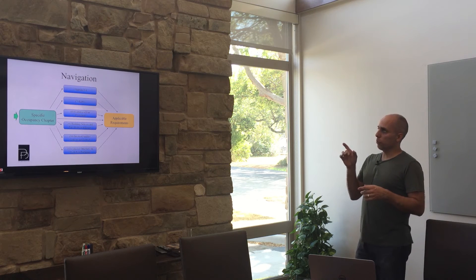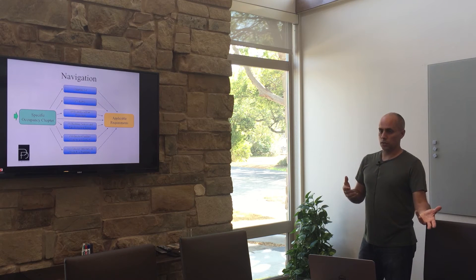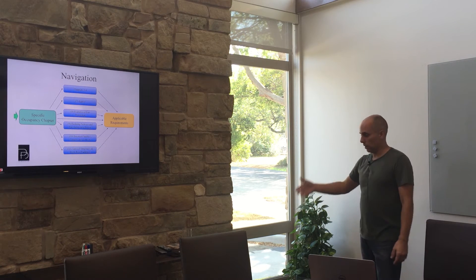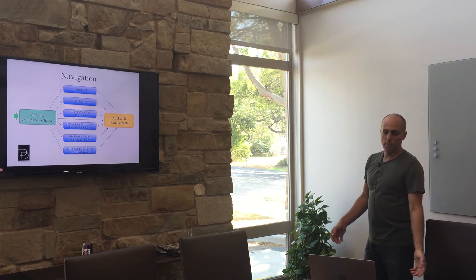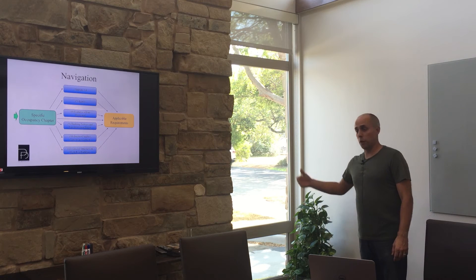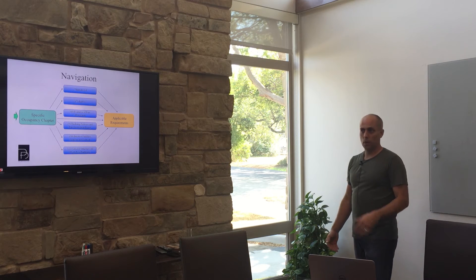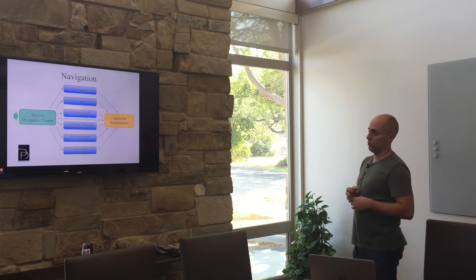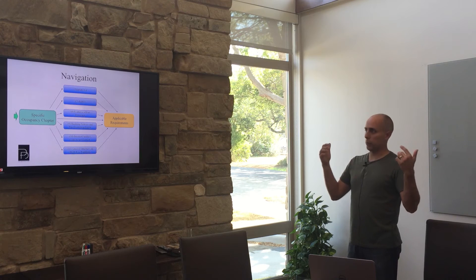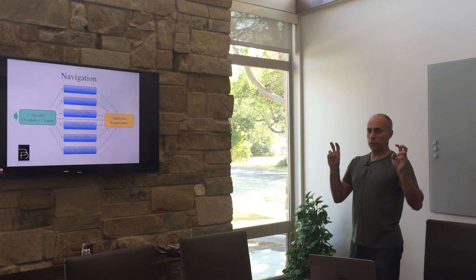One of the biggest misconceptions is: 'Chapter 7 egress is there, so it all applies — I can pick any section from chapter 7 and require it.' That is only valid if required by the occupancy-specific chapter, because requirements may be modified, restricted, or simply not applicable. Chapter 7 does not apply to everything, and neither does chapter 9 — only if the parent occupancy-specific chapter tells you it does.